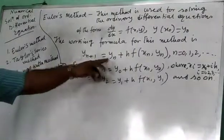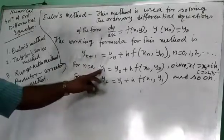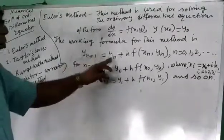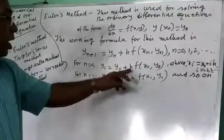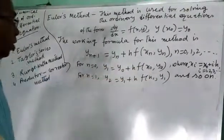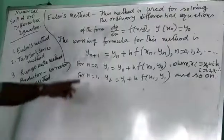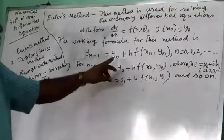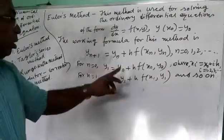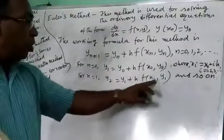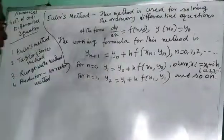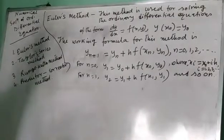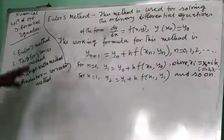For n equal to 0, that is the first iteration, the formula gives y1 equal to y0 plus h·f(x0, y0). Putting n equal to 1, we get y2 equal to y1 plus h·f(x1, y1), and so on. By putting n equal to 0, 1, 2, and so on, we will get successive values. This is Euler's method.